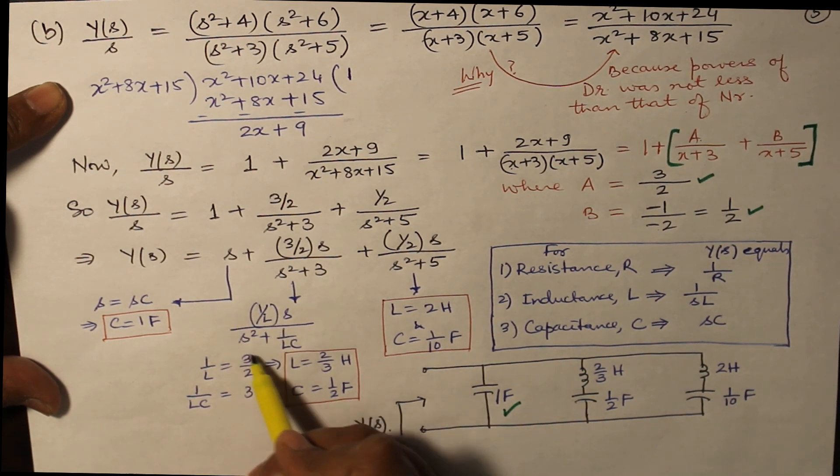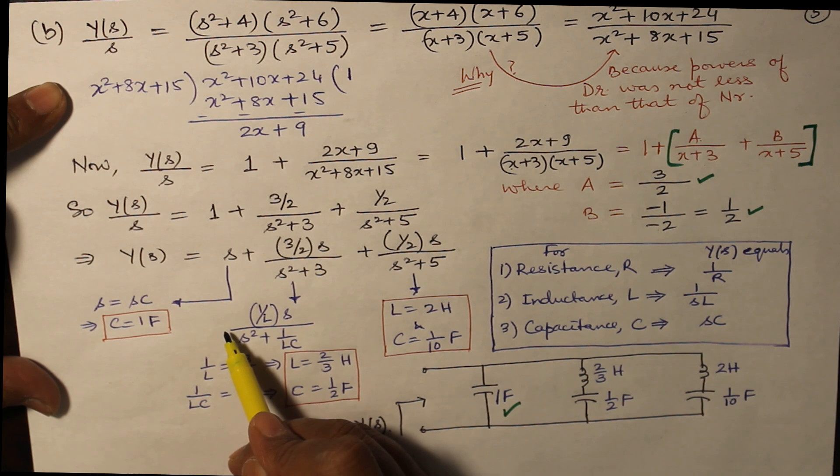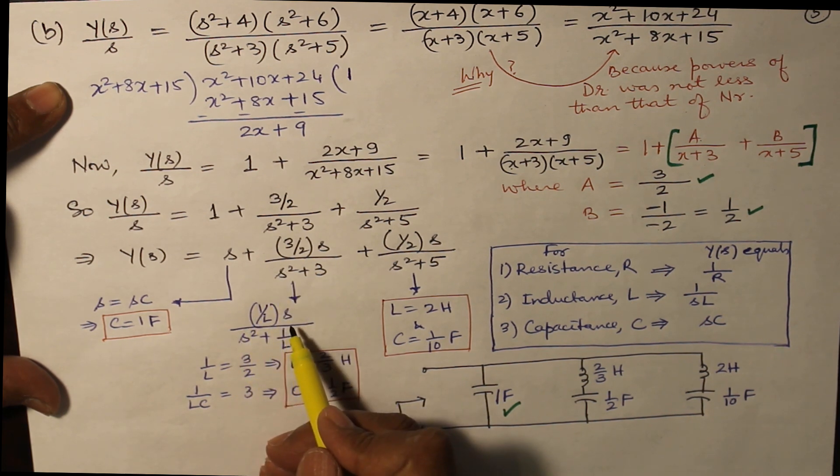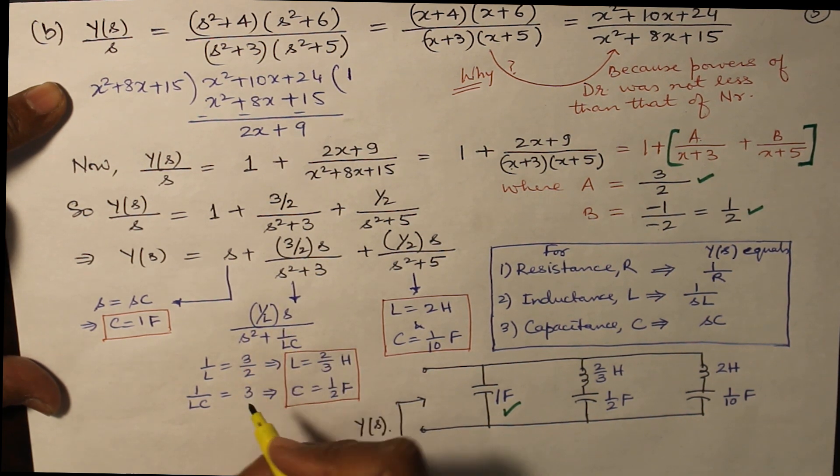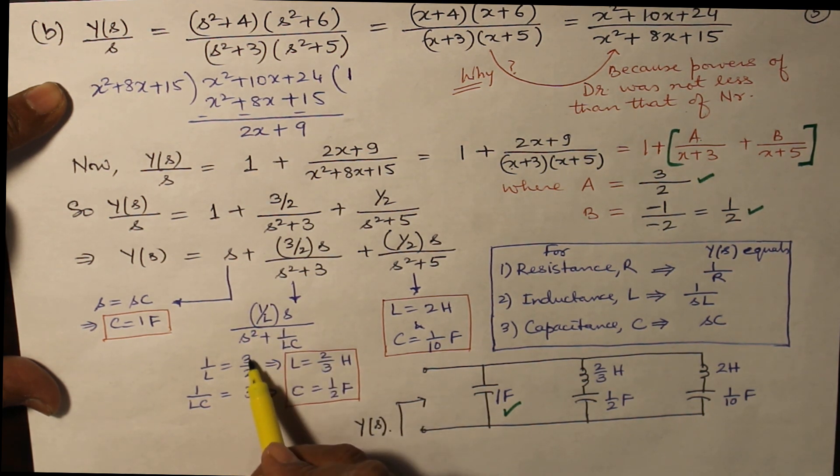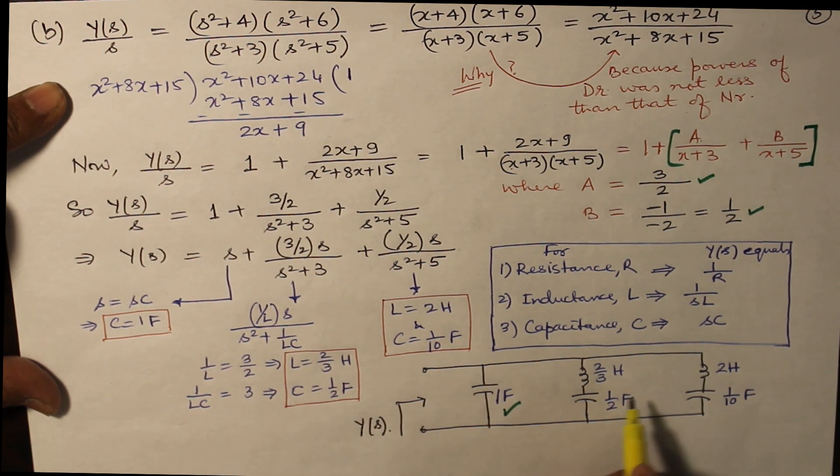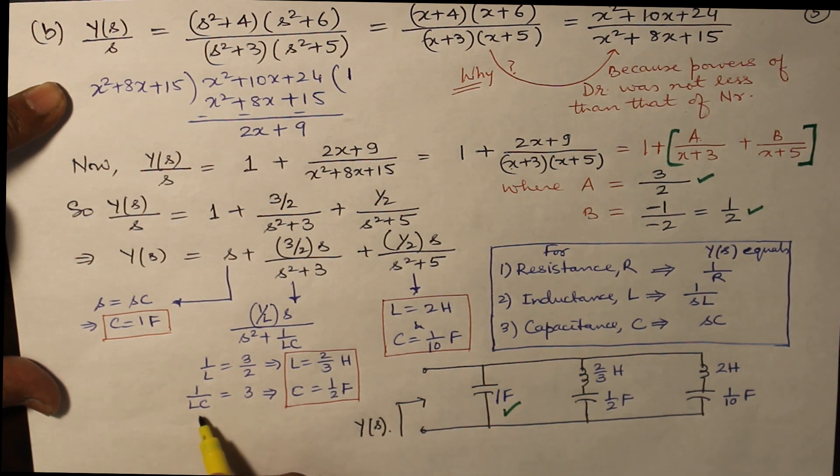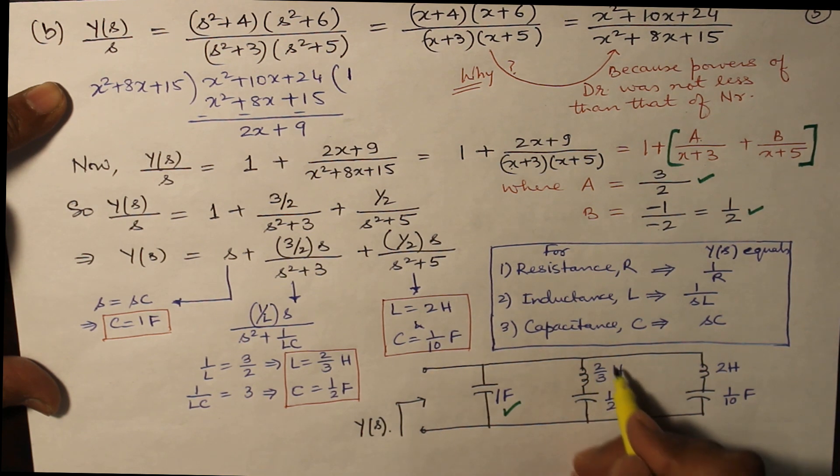Now this 1/(Ls) / [s² + 1/(LC)]. Either you can remember the result or you can do it right at that point. So 1/L equals 3/2, so L becomes 2/3 henry. And 1/(LC) is 3, so that is going to give you C equals 1/2 farad. So both of them are in series.